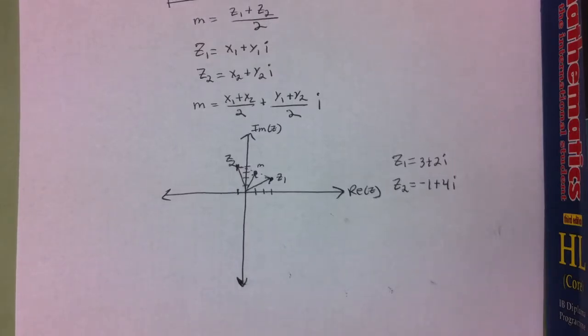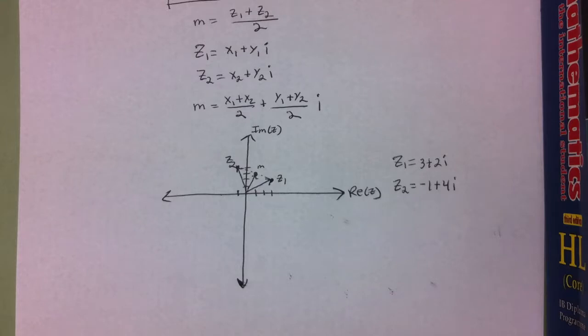When you're finding the midpoint of two points in the Cartesian plane, you average the x values and the y values. But since complex numbers have a real component and an imaginary component, you can just add the two numbers together and divide them by two, and that will give you the midpoint.